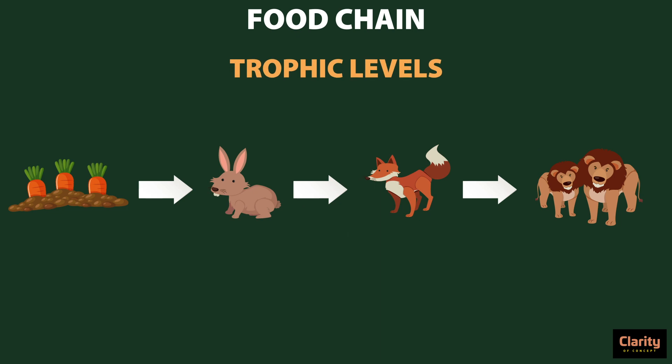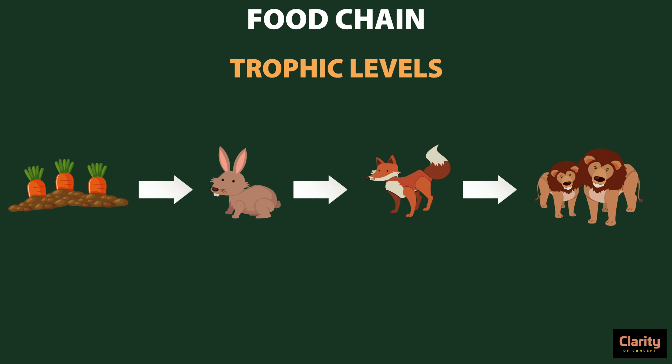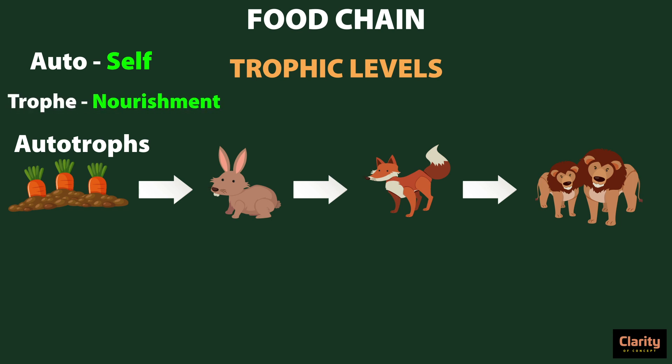A food chain has to have a starting point where the producers produce food by using non-living things such as minerals, water and sunshine. The producers who are at the beginning of the food chain are called autotrophs. 'Auto' means self or one's own and 'trophi' means nourishment, the action of eating food. Producers produce organic food from inorganic constituents such as minerals, water, carbon dioxide and sunshine. Using these inorganic materials, autotrophs produce food for themselves and store it.